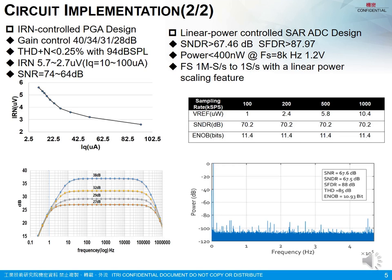SNDR is higher than 67dB and SFDR is higher than 87dB. Its sampling rate can be scaled from 1M samples per second to 1 sample per second with a linear power scaling feature.